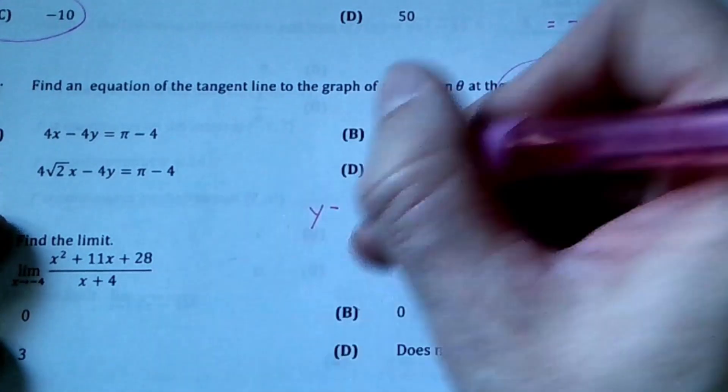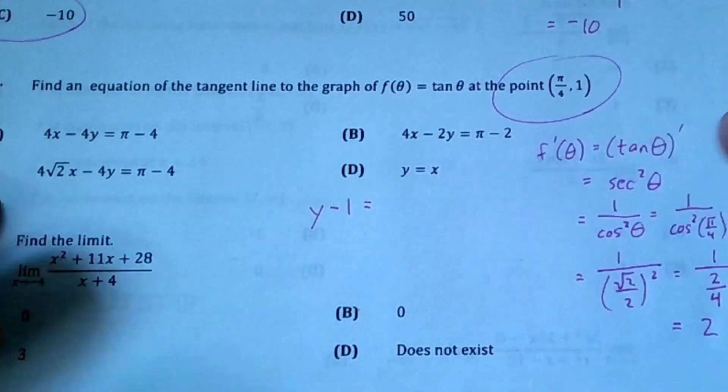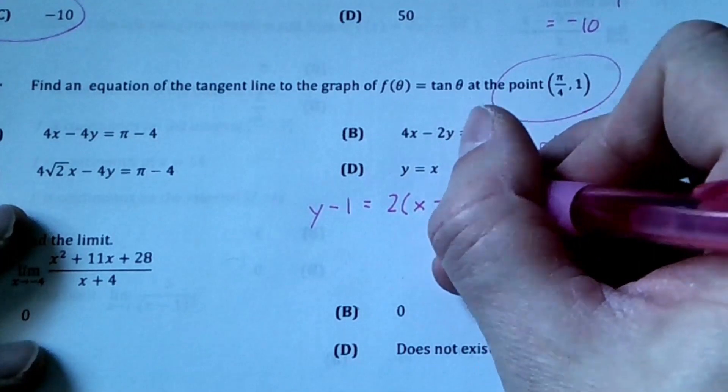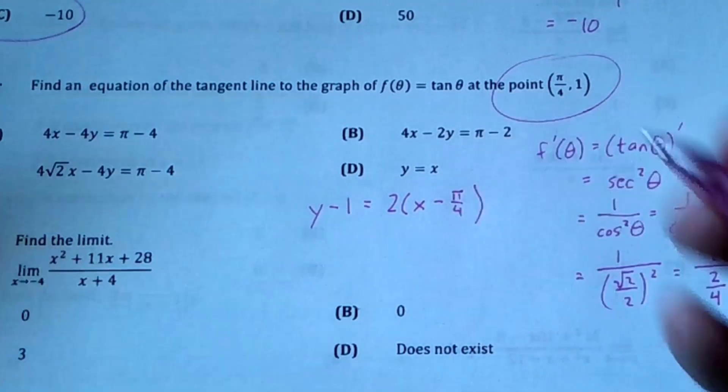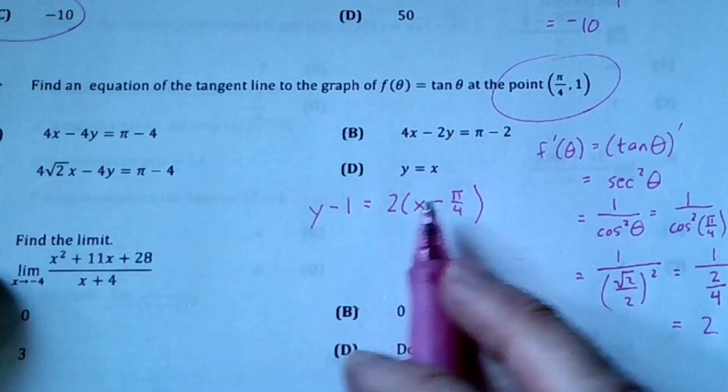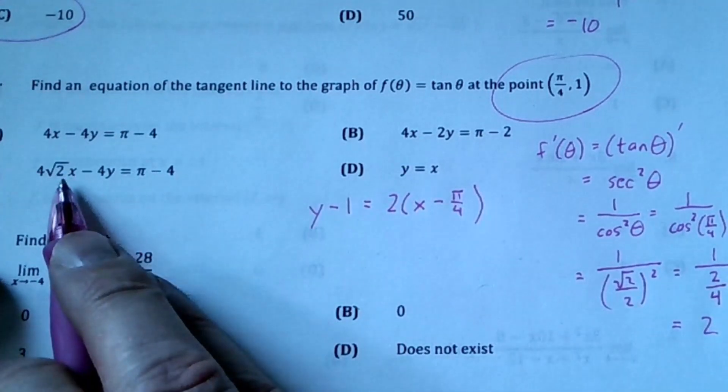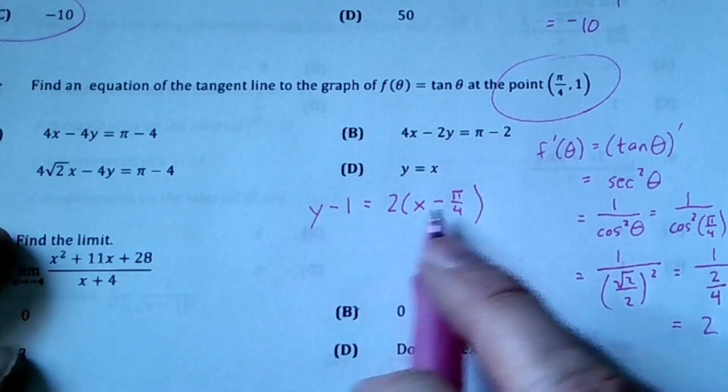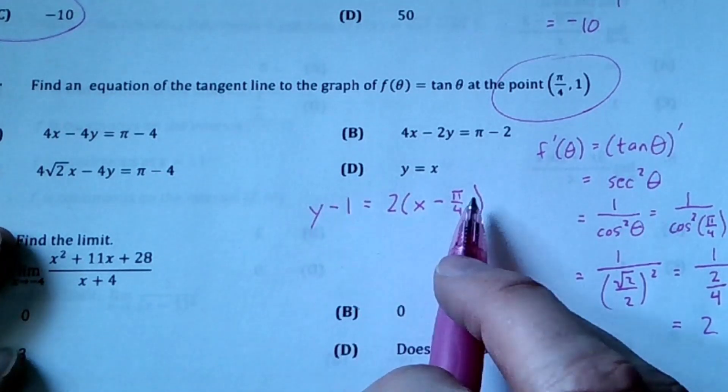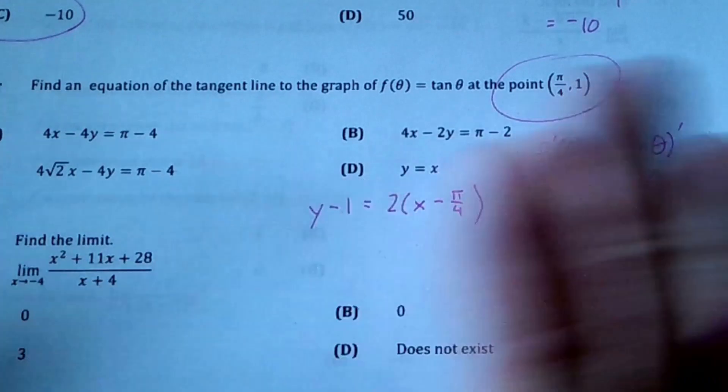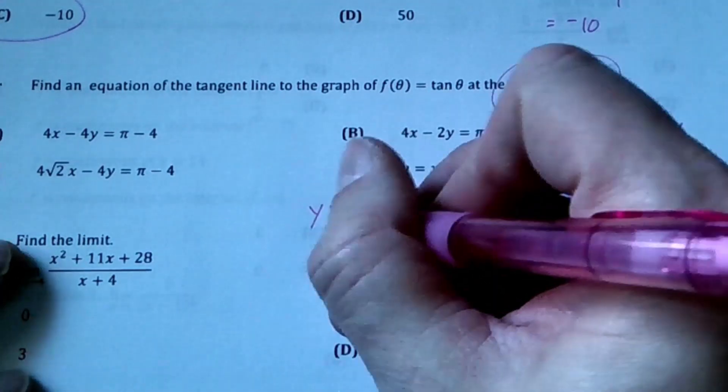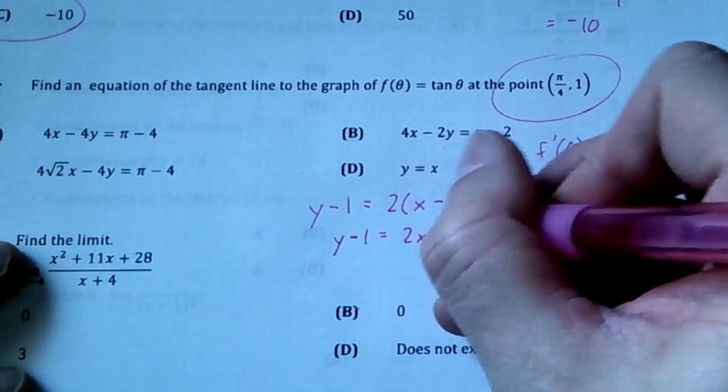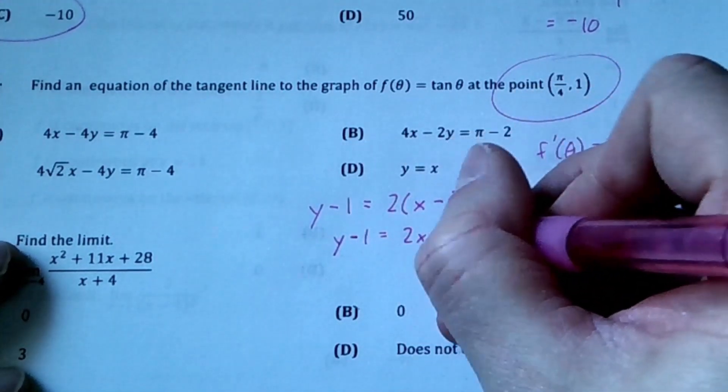The line will be y - 1 = 2(x - π/4). Unfortunately I don't see any of that in the answer choices, and I definitely don't see a square root of 2, so I'm going to have to distribute and move things around. y - 1 = 2x - π/2.